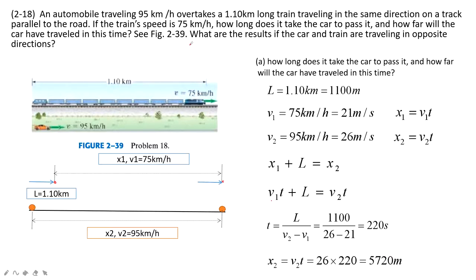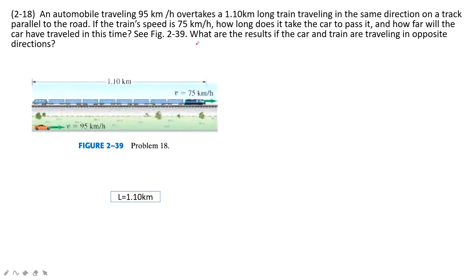Then the next question asks you what are the results if the car and the train are traveling in the opposite direction. So still we can draw a picture. There is still the road. And then we can see this is the train initial position, and the final position is there.